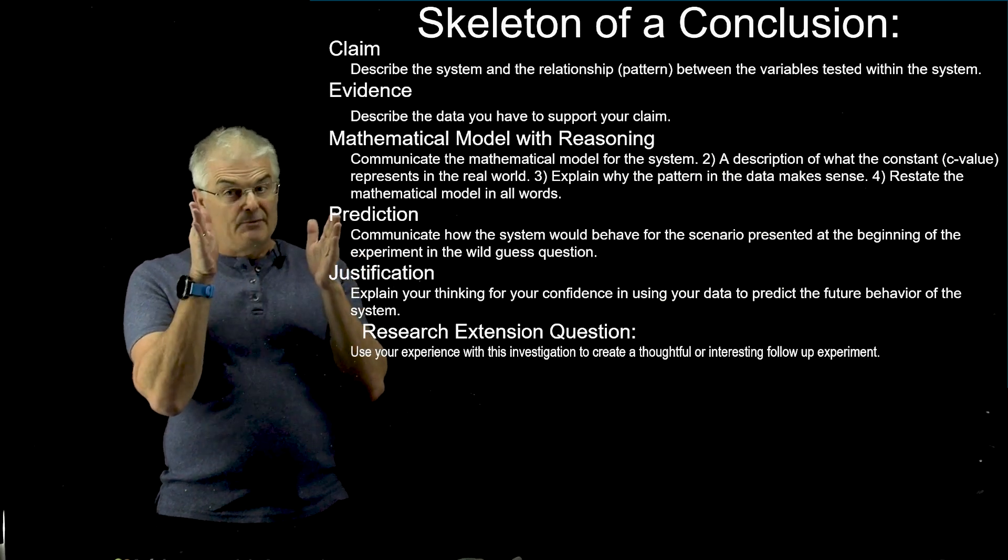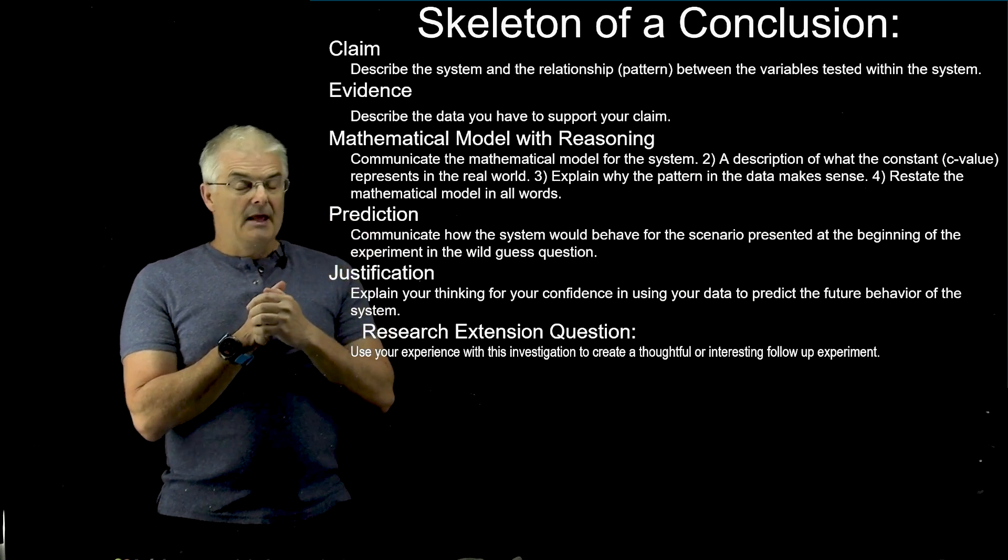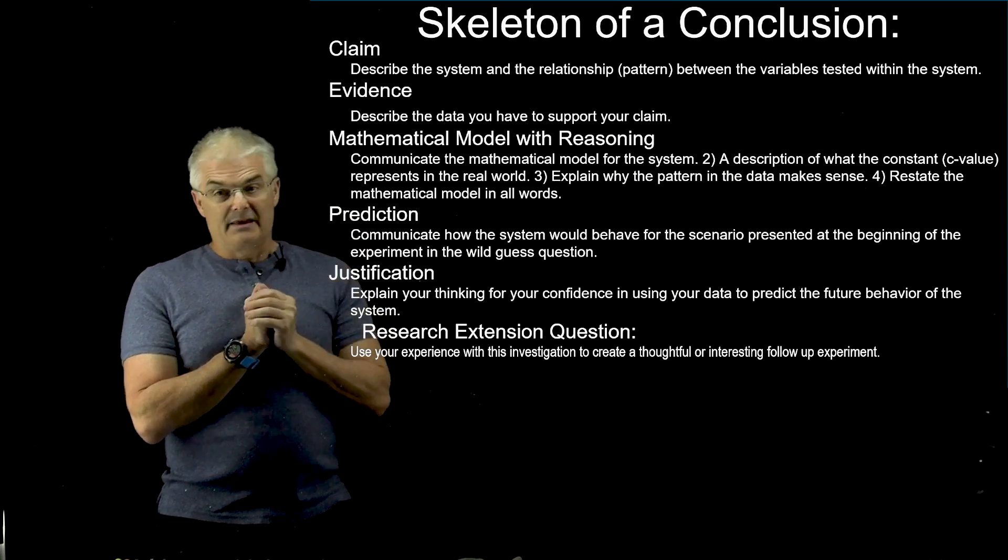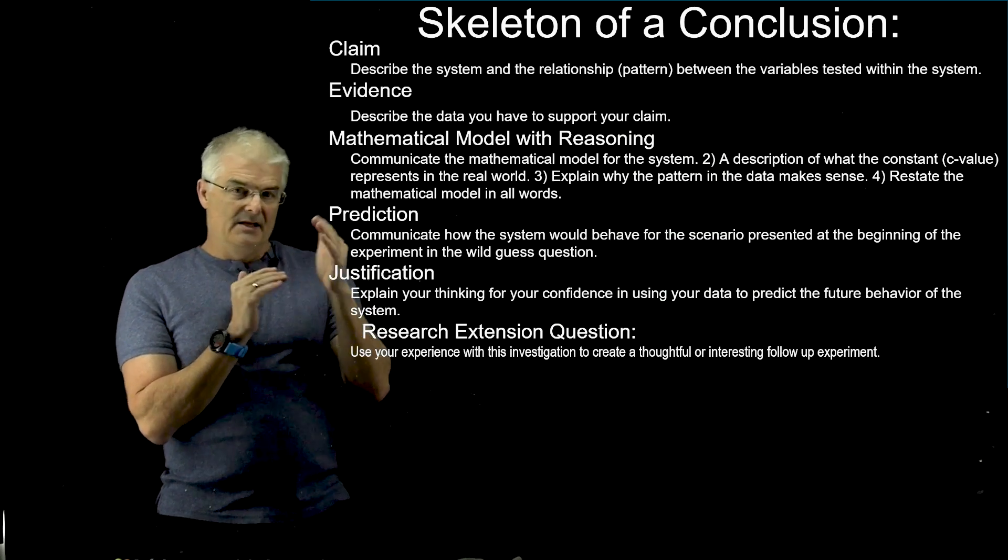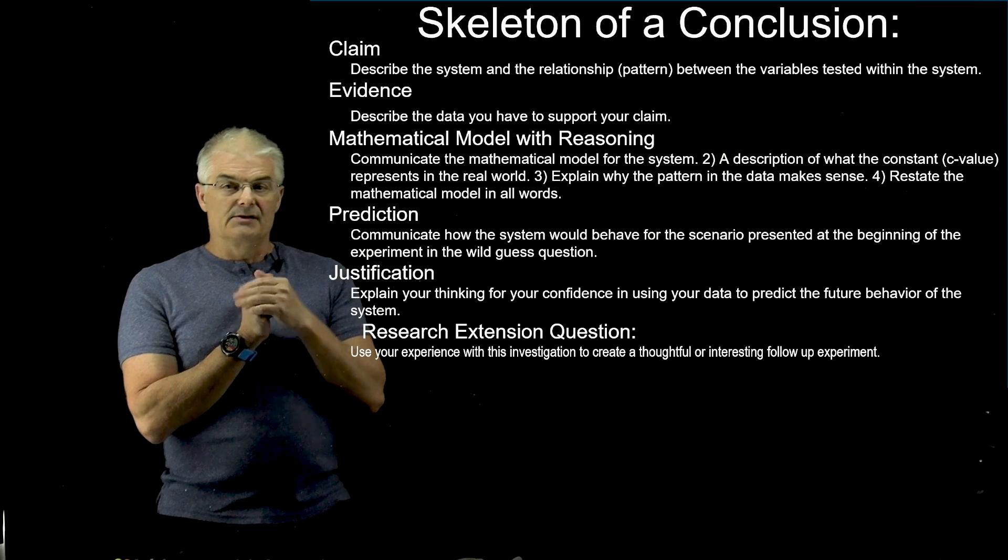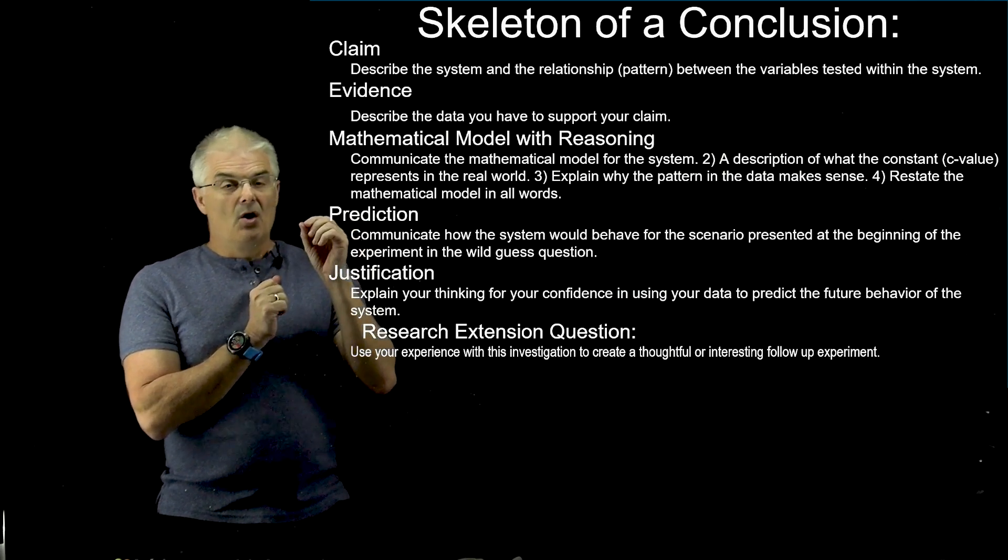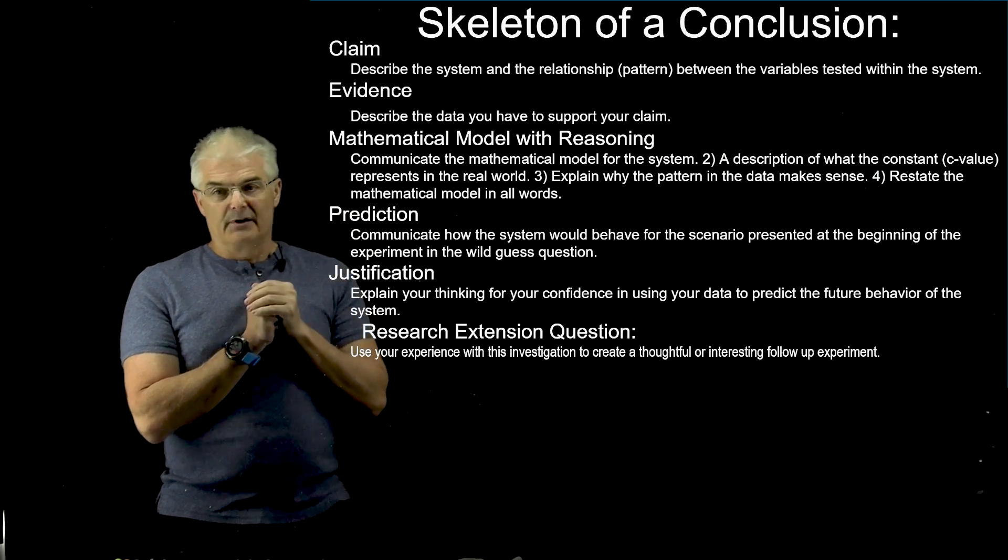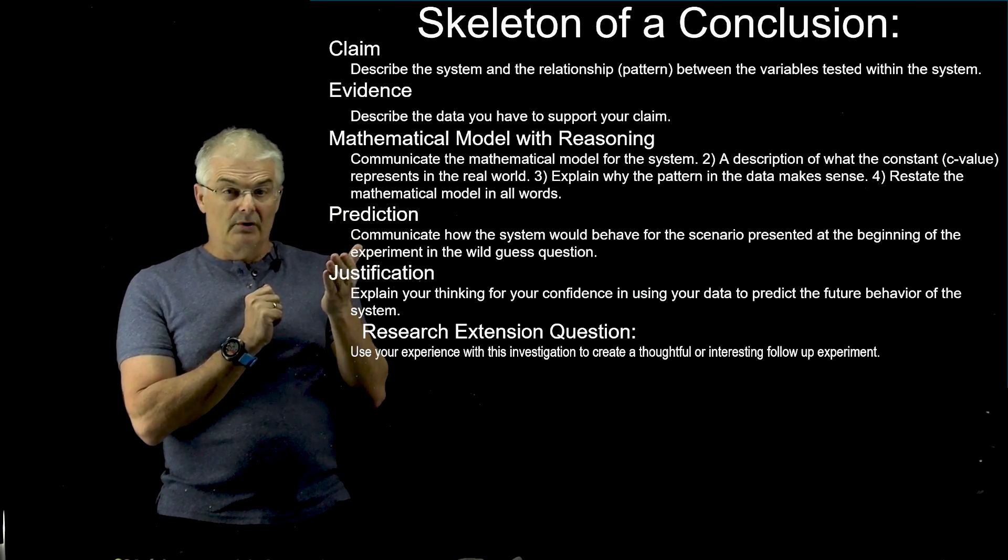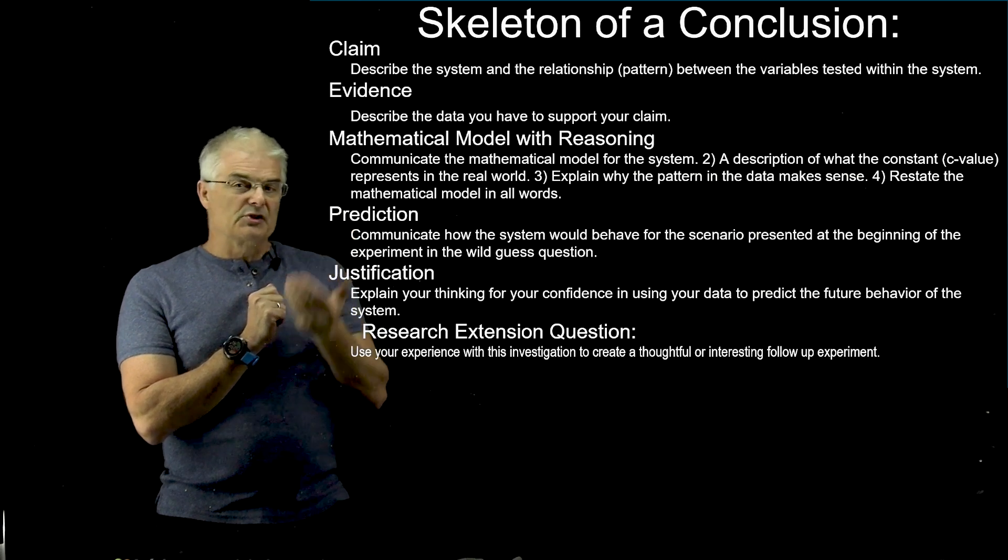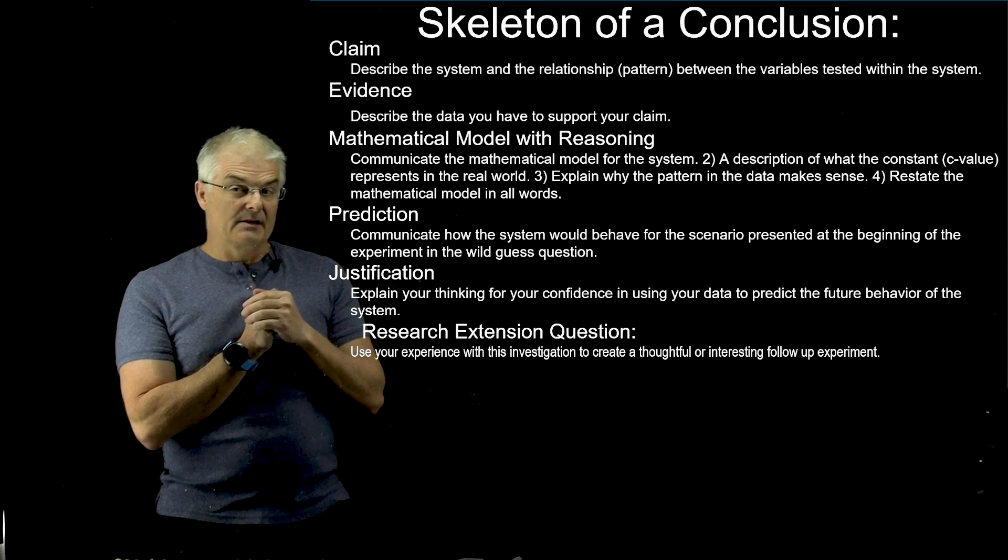Then you're going to describe your evidence for your claim. And then you must write out your mathematical model, not just an equation, but also explaining it. There's a description of what the constant is. So if you have a c-value, like we talked about in Desmos in the previous video, what's the meaning of that variable and what that represents in the real world. And also, you have to restate the mathematical model in words, not just written out as a mathematical equation.